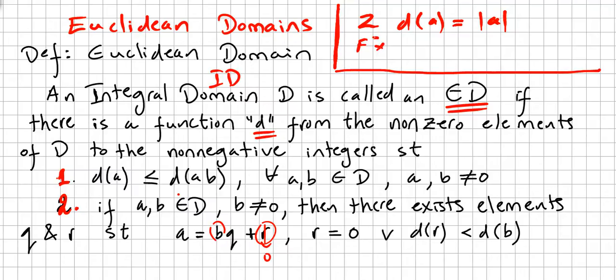Or for instance, the ring of polynomials where F is a field - this is a Euclidean domain too. The function for this should be d(f(x)) which maps the polynomial into the degree of the polynomial. So this ring of polynomials is a Euclidean domain.